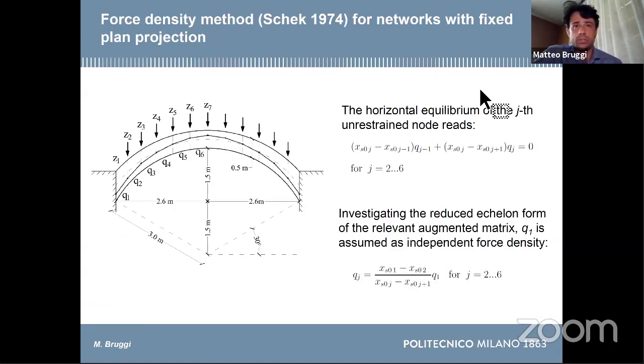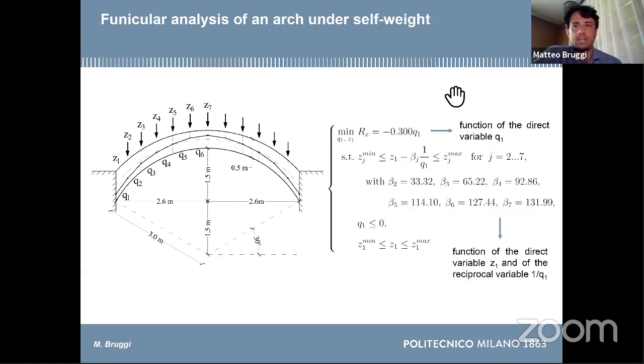If you write the horizontal equation of equilibrium, you can see that not all the force densities are independent, but you can find a limited subset. In this case, there is only one independent force density. The proposal is to set up a formulation that uses as minimization unknowns the independent force densities, here labeled q1, and the vertical coordinates of the restrained node, here for symmetry reason only one, z1.